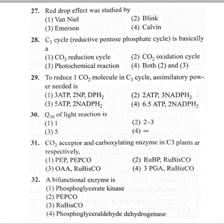Quantum yield is the amount of oxygen released per quantum of light energy absorbed. In these experiments, two different wavelengths were used. When plants were given shorter wavelength, the quantum yield was 53. When exposed to longer wavelength — 700 nanometers — the quantum yield was 10. But when exposed to both shorter and longer wavelength simultaneously, the quantum yield was 72, drastically increased.